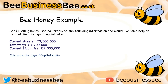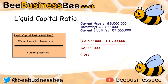On screen is an example — calculate the liquid capital ratio using those figures. The answer is current assets minus inventory, divided by current liabilities, giving 0.9 to 1. That means the organization has 90 pence in liquid current assets for every one pound in current liabilities, and if they sell their stock they can recover that remaining 10 pence per pound.